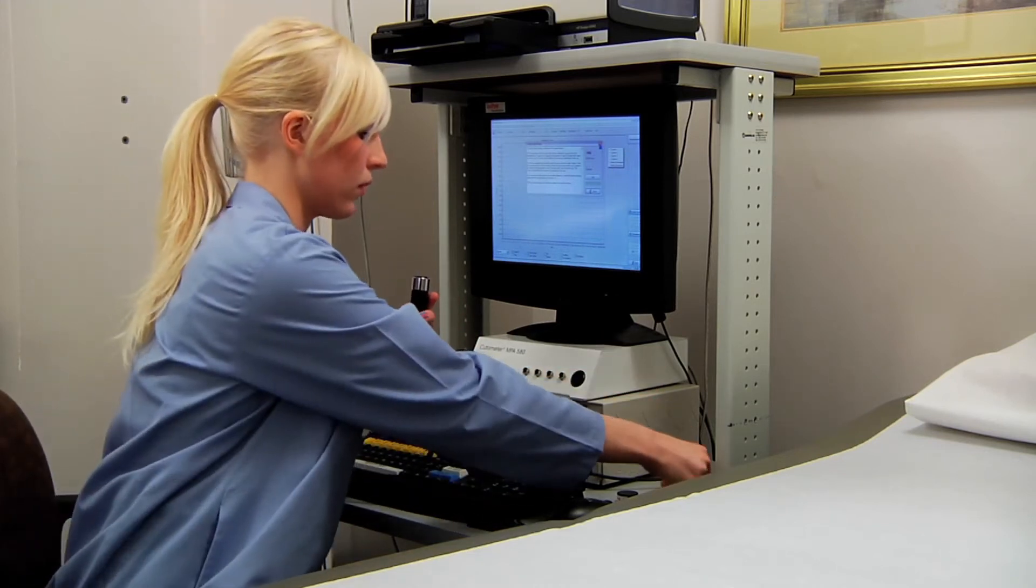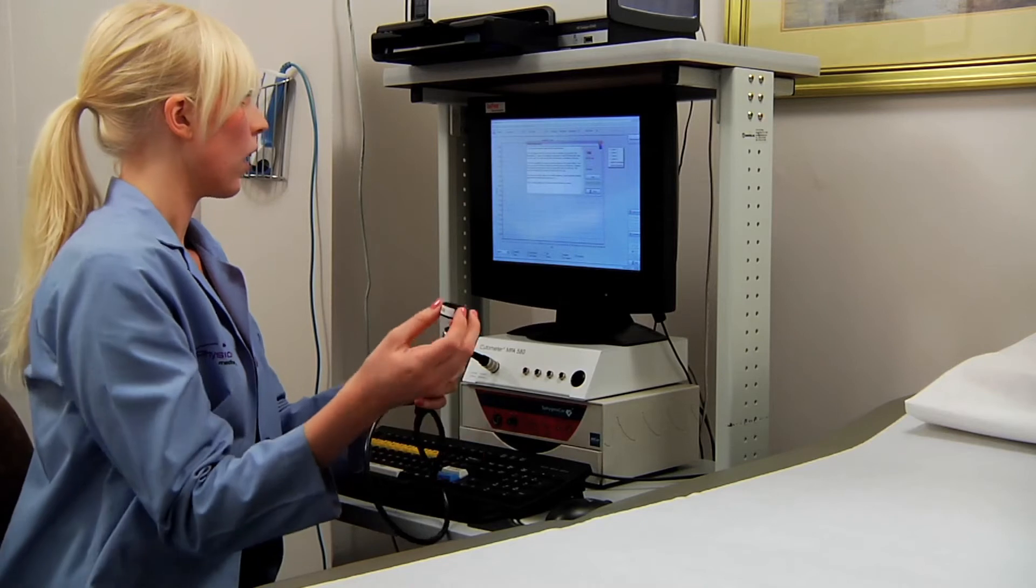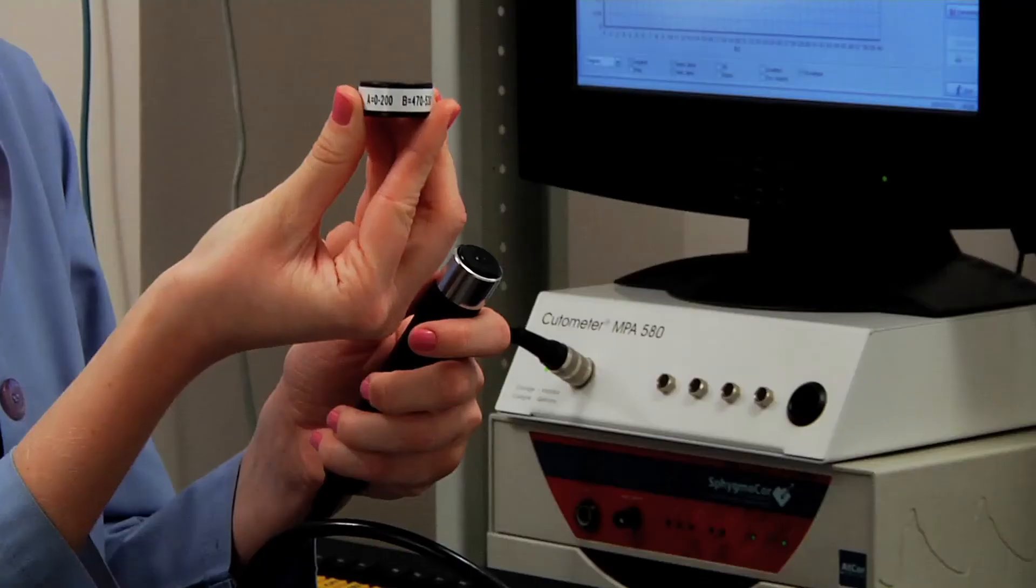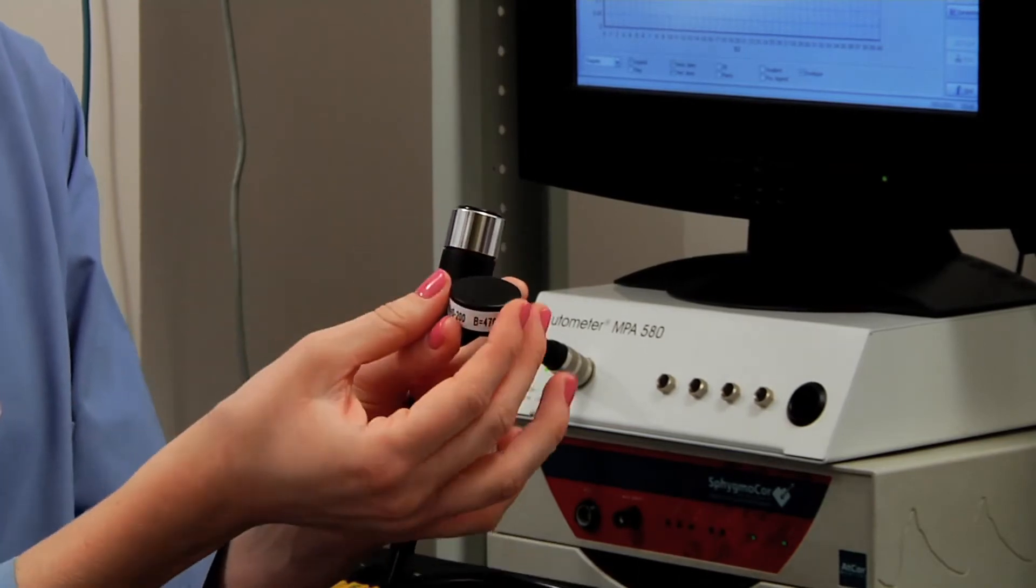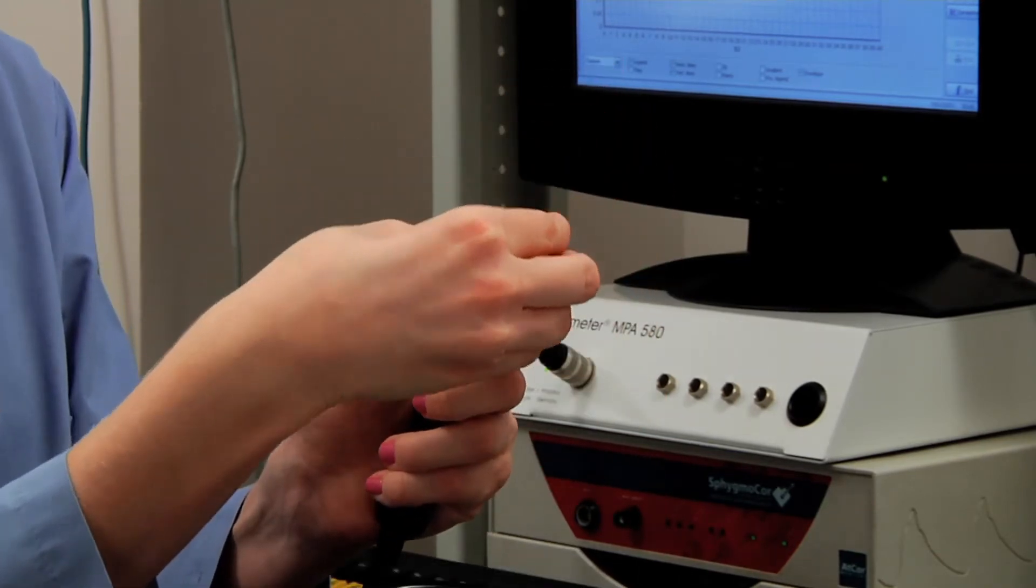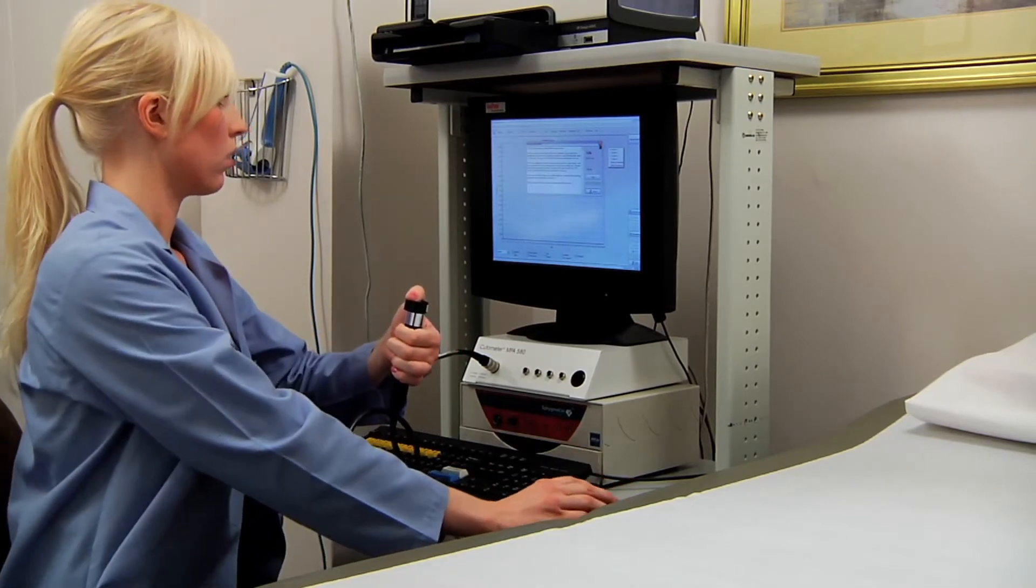As soon as you do that, you're going to put the probe on the flat side of the check calibration cap. This is the check calibration cap. You're going to put the flat side here on the probe and you're going to hold it down. You're going to keep pressure on there. Hit the start button and you're going to wait for it to calibrate.